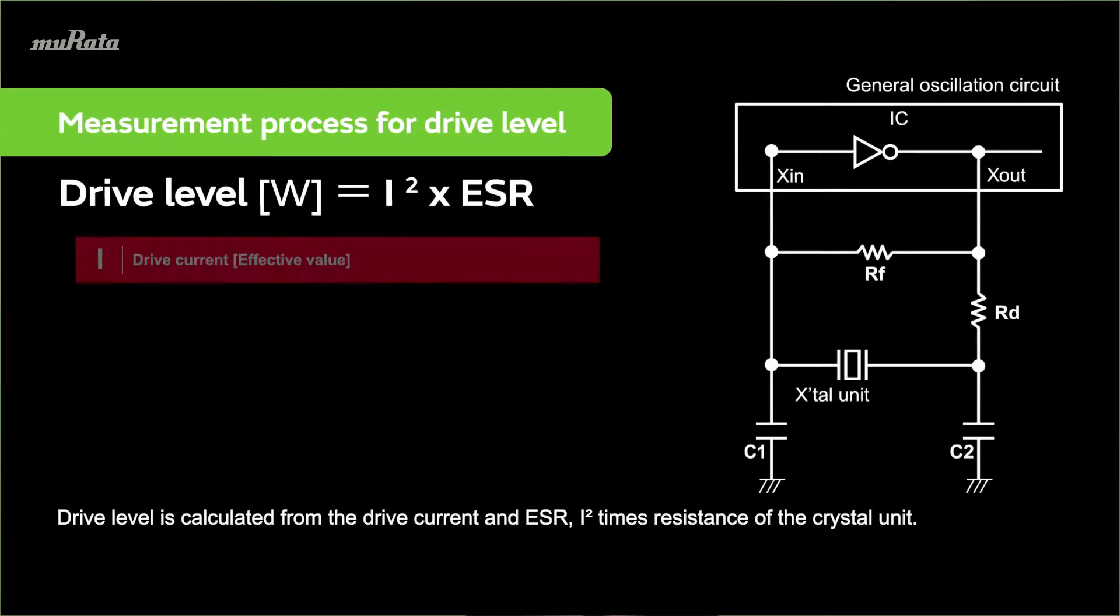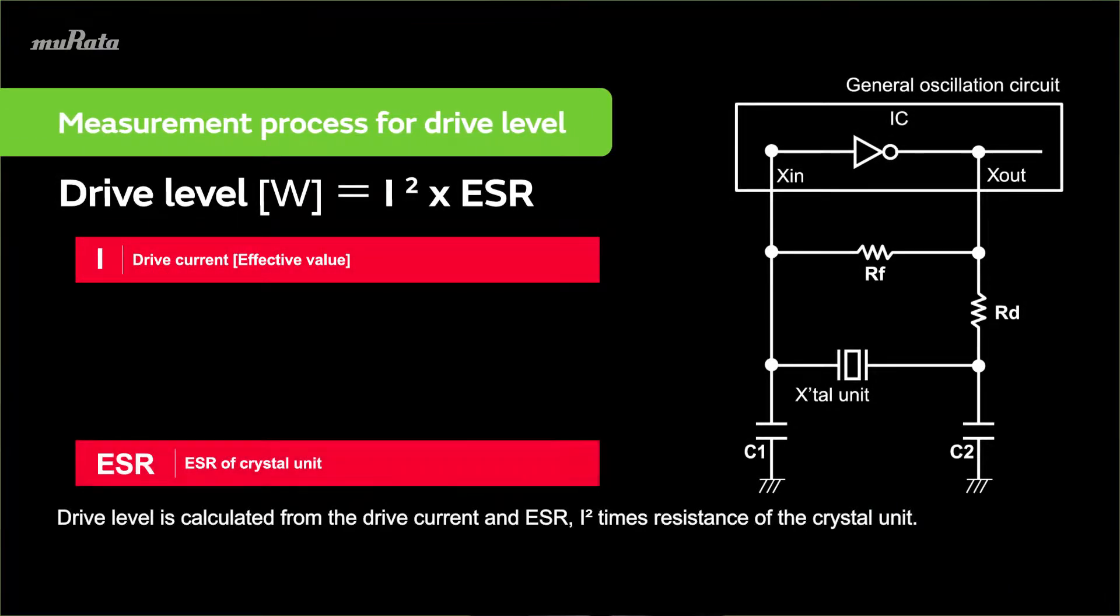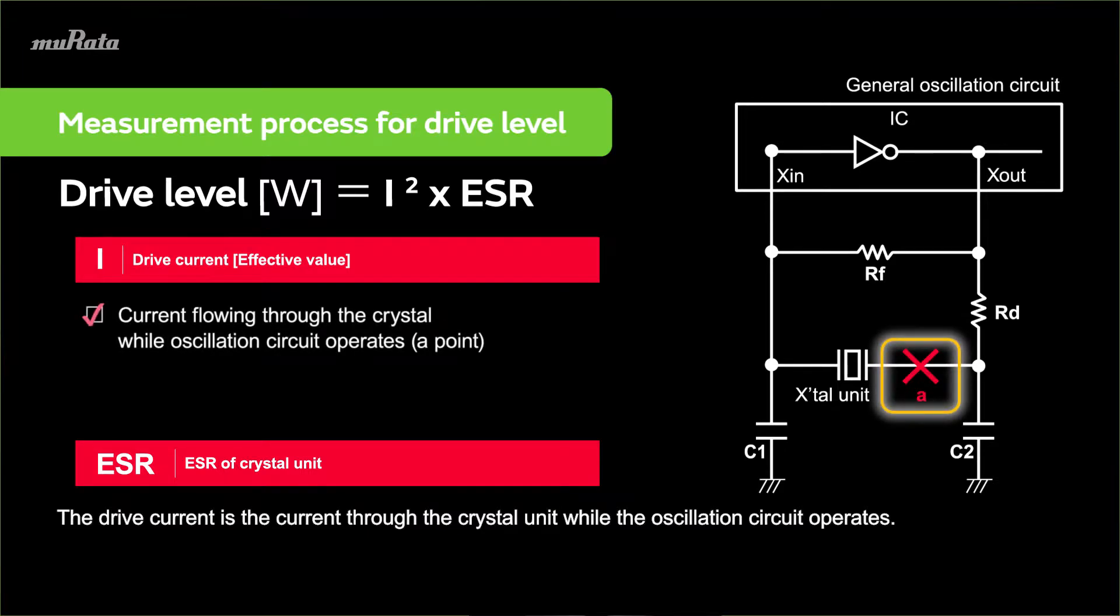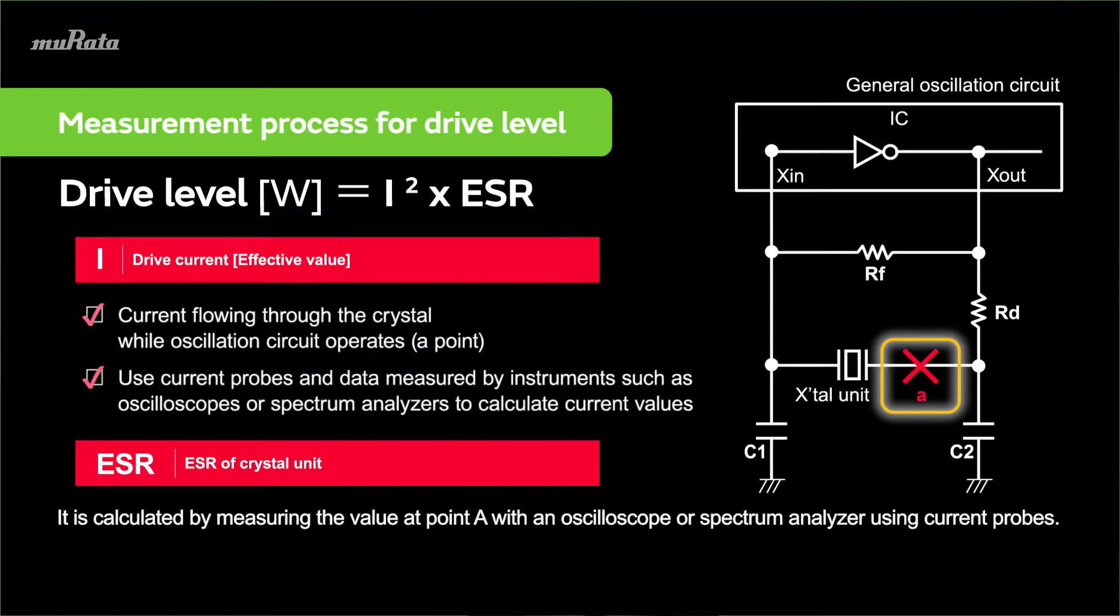Drive level is calculated from the drive current and ESR times resistance of the crystal unit. The drive current is the current through the crystal unit while the oscillation circuit operates. It is calculated by measuring the value at point A with an oscilloscope or spectrum analyzer using current probes.